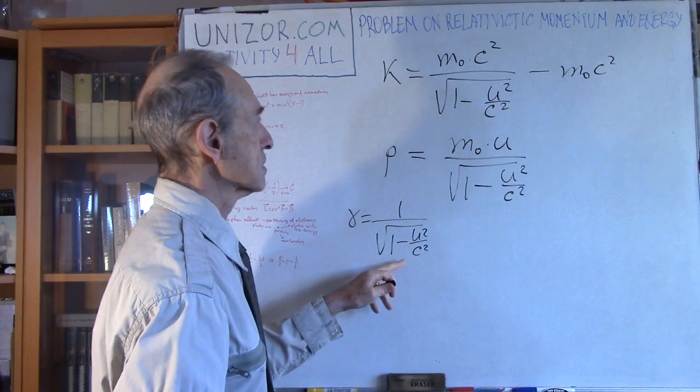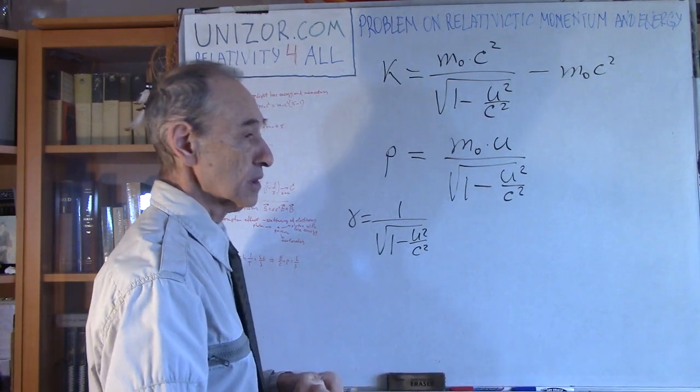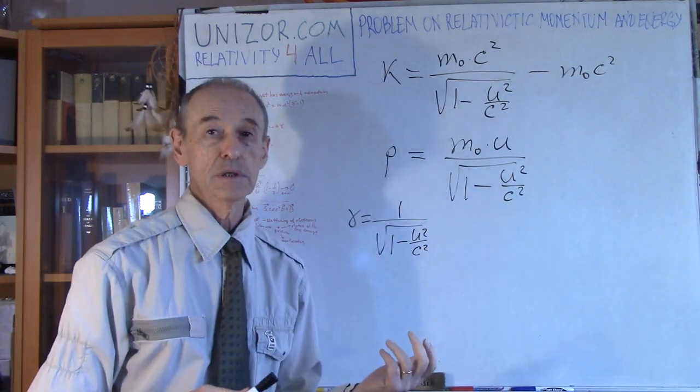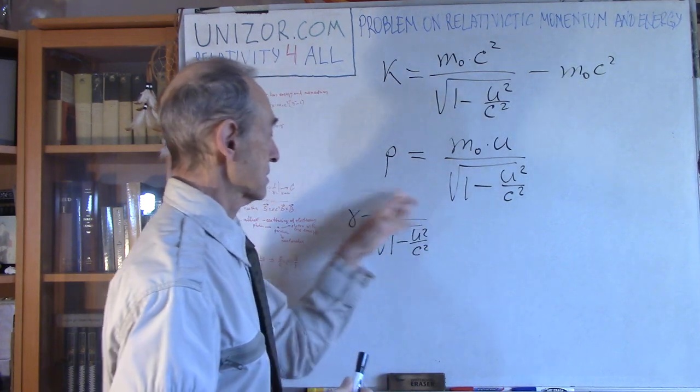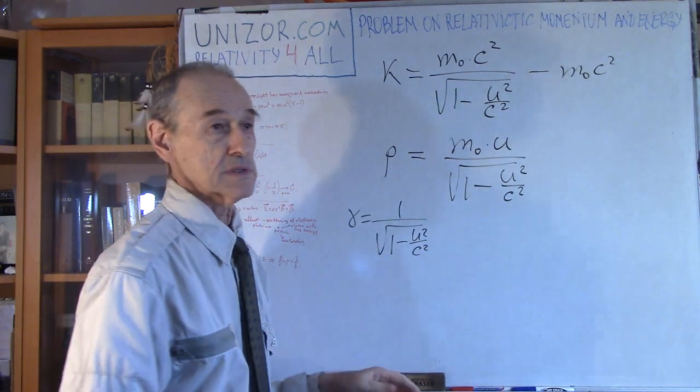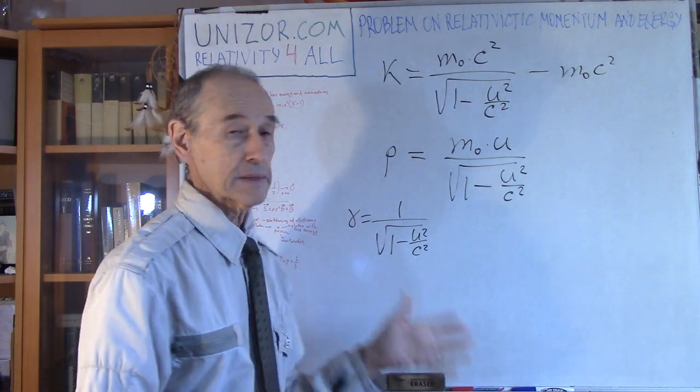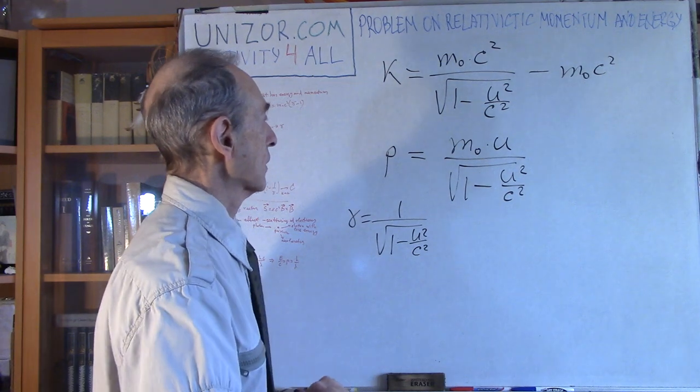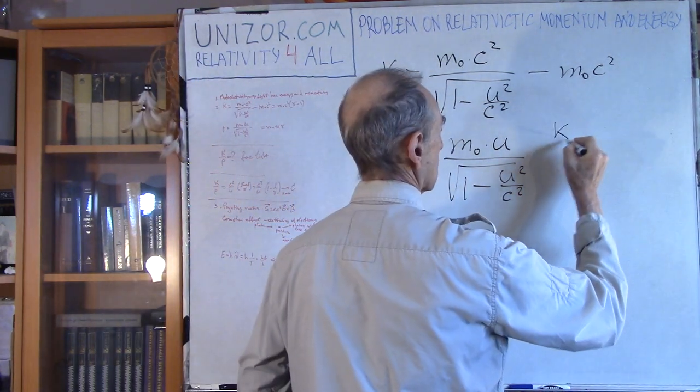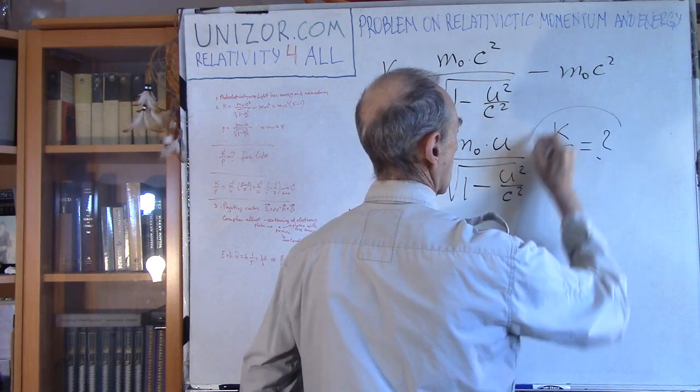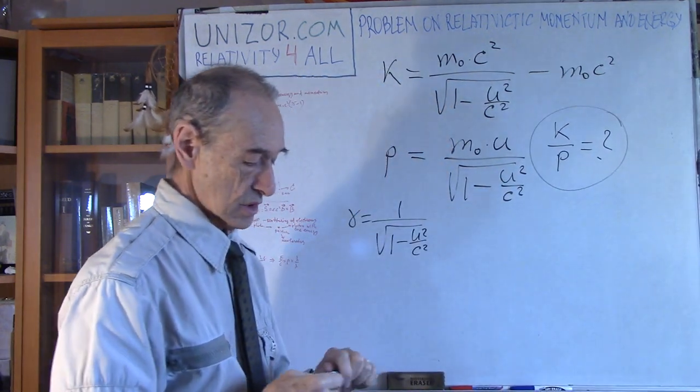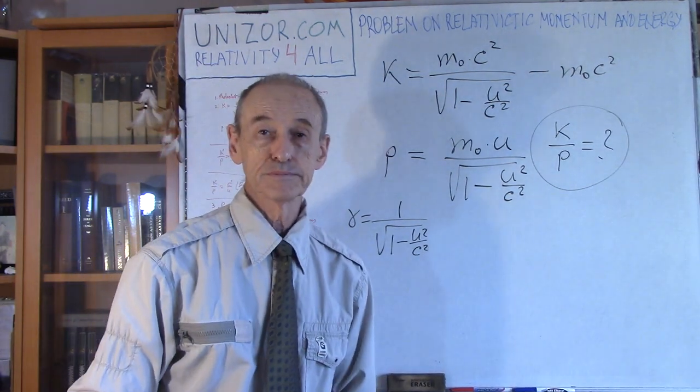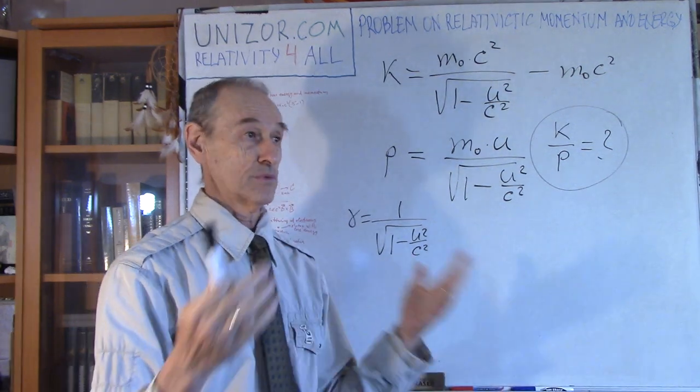Existence of this Lorentz factor is really very characteristic for relativistic mechanics. It's actually present in most of the formulas in some way or another. So my problem now: I would like to find out what is this ratio, kinetic energy to momentum, for light.